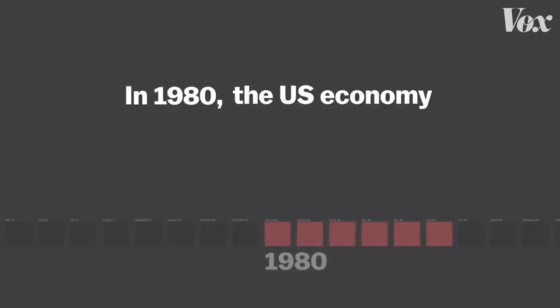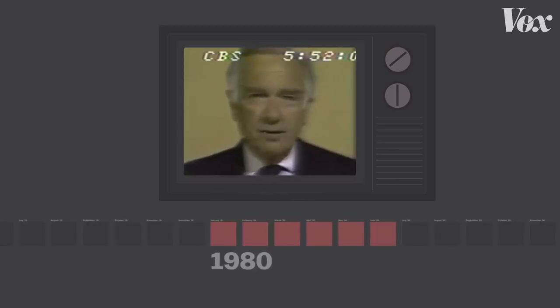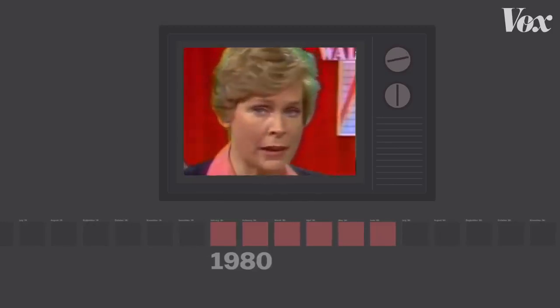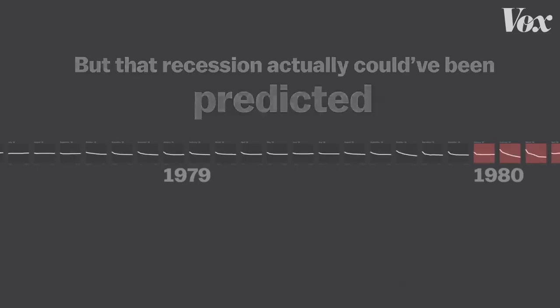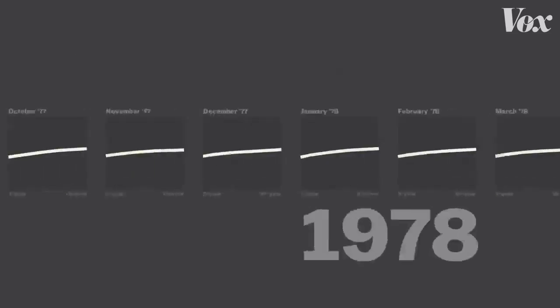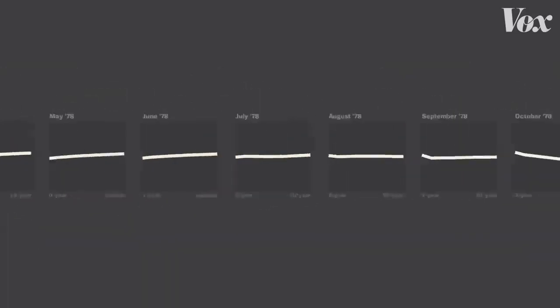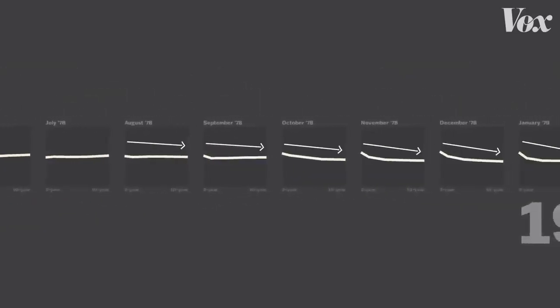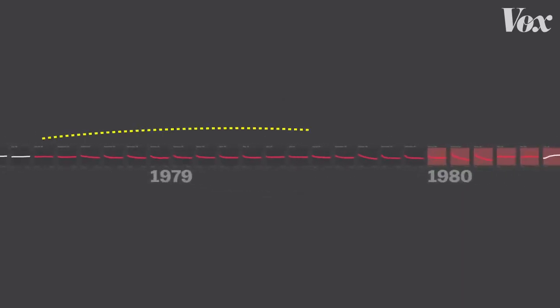In 1980, the U.S. economy went into a recession. Automobile production dropped 37.5% and Wall Street reacted very badly. But that recession actually could have been predicted if you were looking at a very specific type of line. Normally this line points slightly upward, like here in September 1977. But about a year later, it started pointing the other way, just slightly. And then not long after that, boom — the 1980 recession.